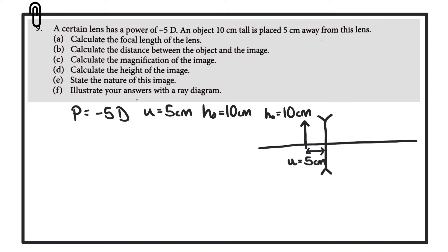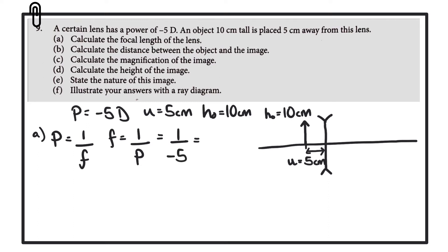Part A: calculate the focal length of the lens. The equation we'll be using here is that the power of the lens is equal to 1 over F. So if we rearrange that, the focal length is equal to 1 over P, which means we have 1 over minus 5. When we do that calculation we get minus 0.20 meters. That unit is in meters because the power of the lens was given in diopters, which is meters to the minus 1. So our answer is 0.2 meters, or 20 centimeters. So F is at 20 centimeters.